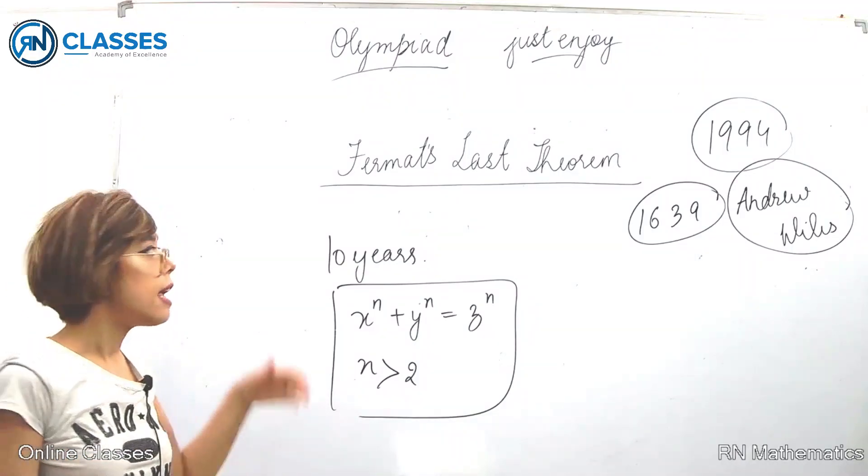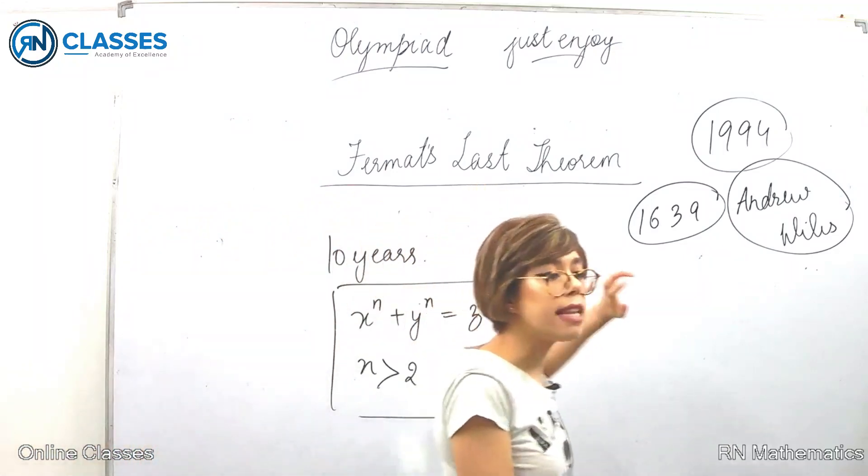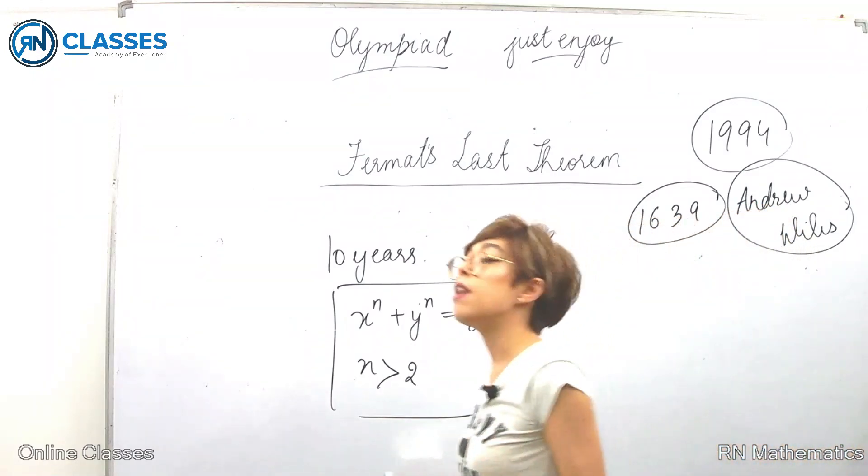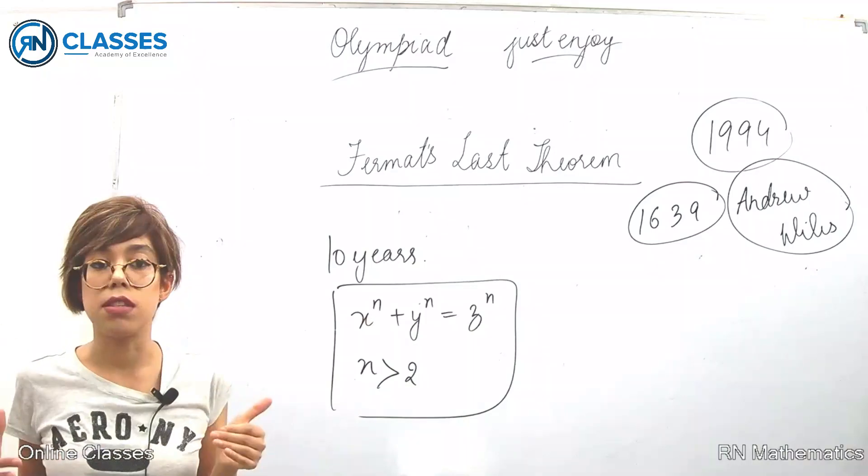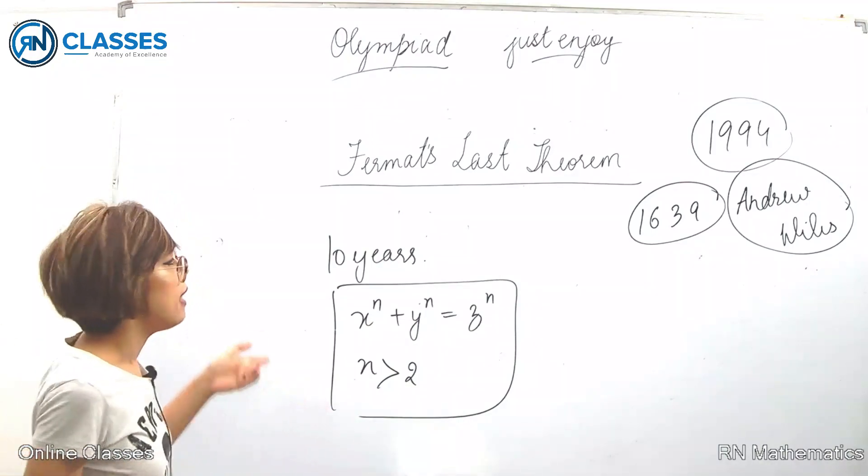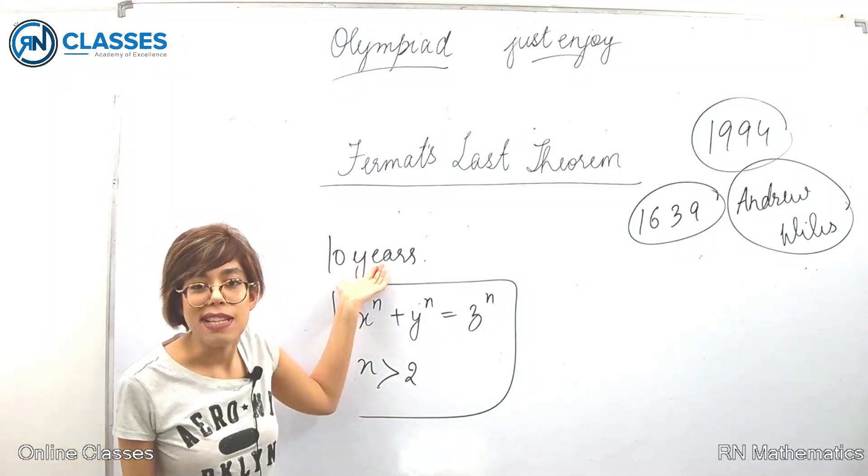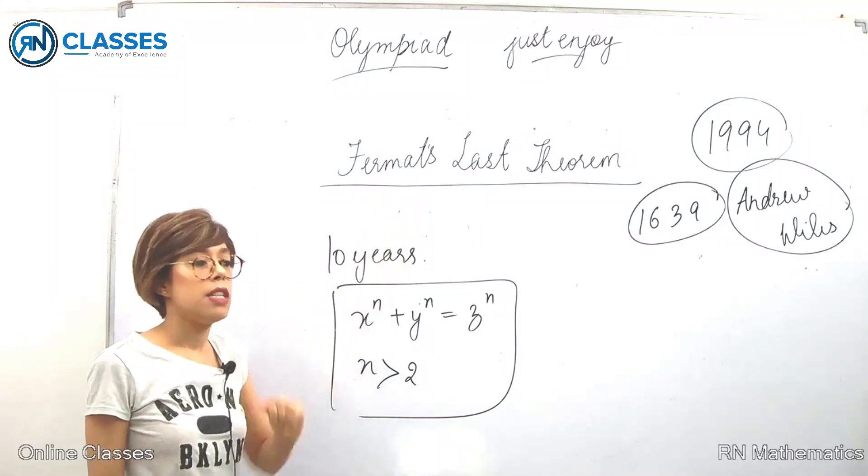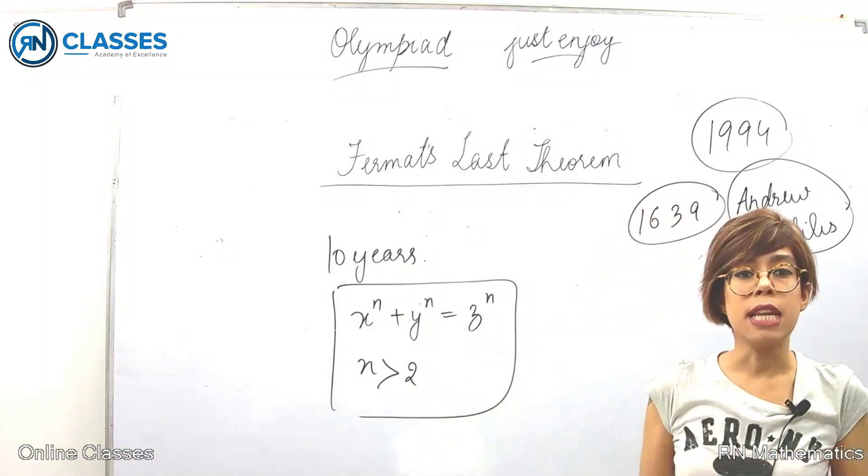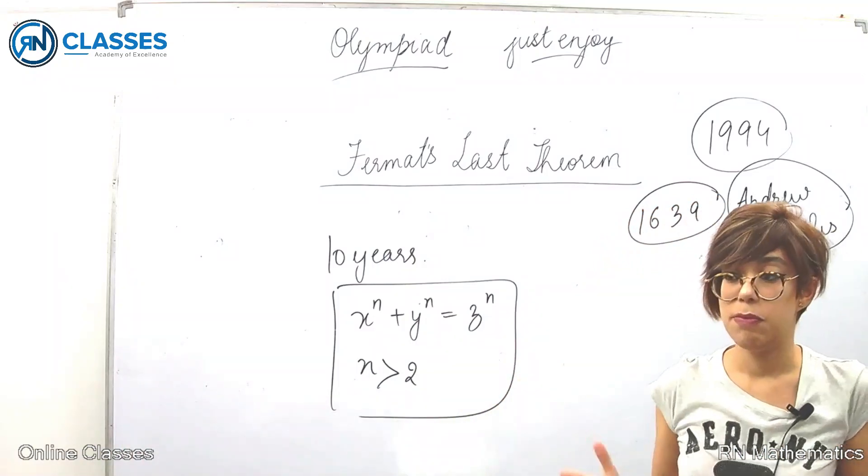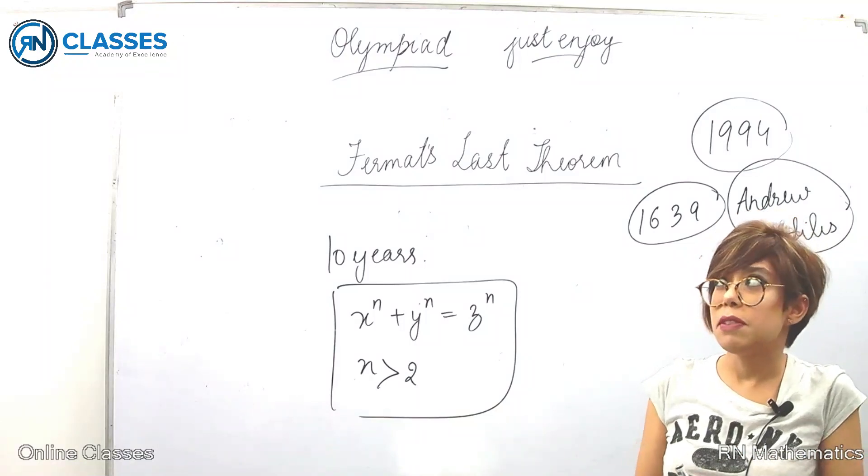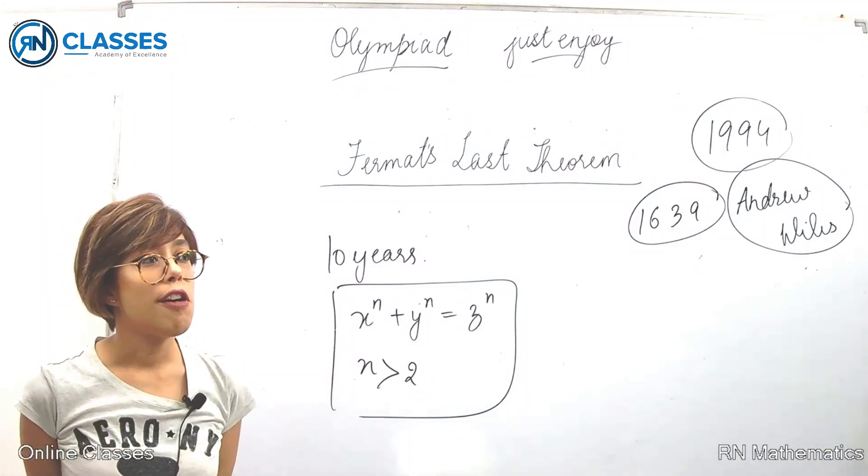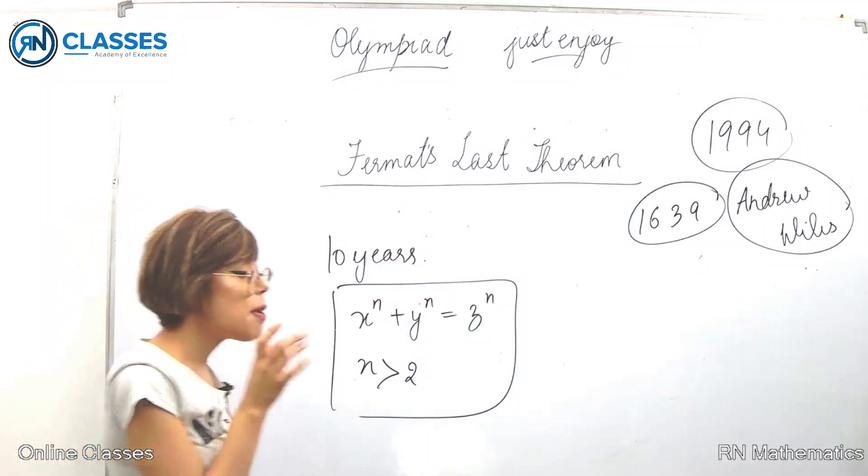When he was at Princeton, he encountered this theorem again in his life. He was like, now I have equipped myself with good education. I know math, I know the techniques, the methods. I think I am better than 10-year-old Andrew was. I'm better equipped now, so I can take a shot at this problem. He decided to take a shot, and he went into self-isolation.